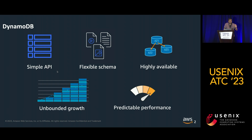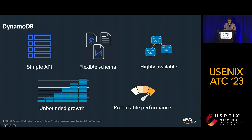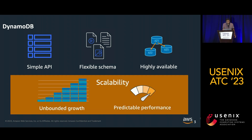On top of that, DynamoDB is highly available — every item you store is replicated in multiple availability zones before it is acknowledged back. It supports unbounded growth: you create a table and we figure out, based on your traffic pattern, how many machines are needed, how much capacity you need, and we do splits behind the scenes. One of the features people love is predictable performance — you can start with 10 TPS and go to millions of TPS and still expect single-digit millisecond performance. In this talk, scalability refers to predictable performance at unbounded scale.